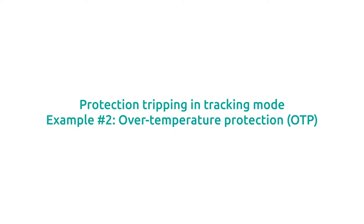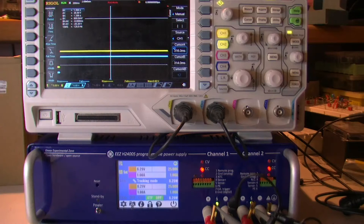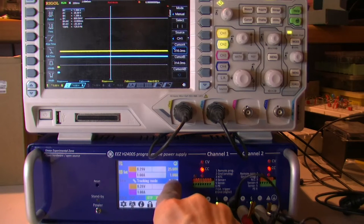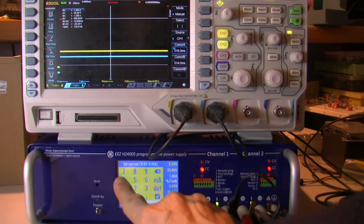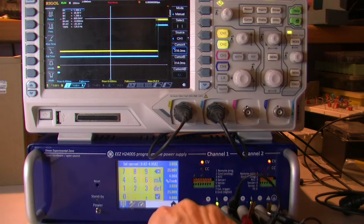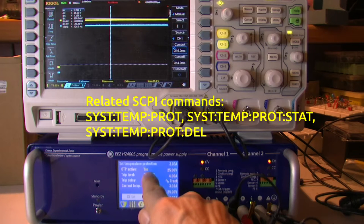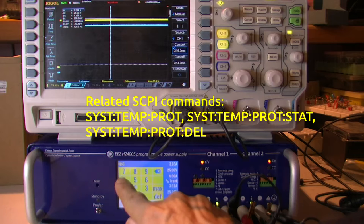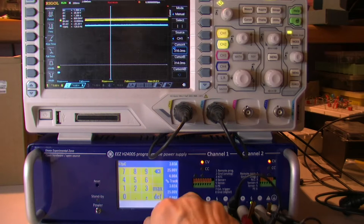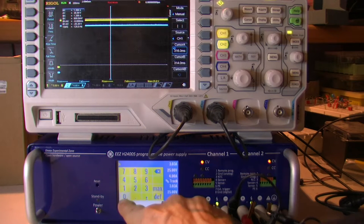We can test some other protection, let's say, temperature protection. First we'll put a lot of current, temperature, we have, let's say, we'll set it on 47, immediately.